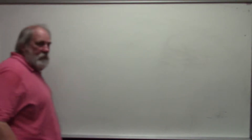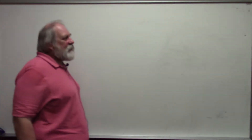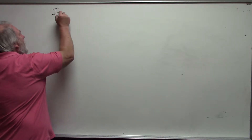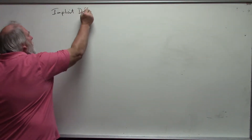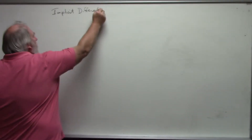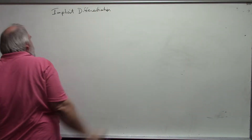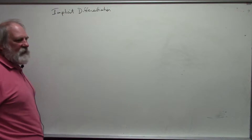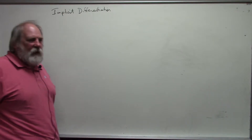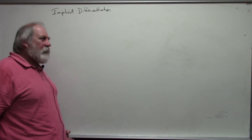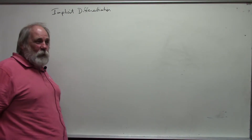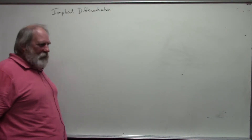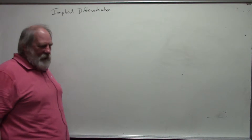Hello. Today's video is going to be about implicit differentiation. Implicit differentiation involves finding the derivative of a variable with respect to another variable, where the equation we have is not written in terms of that variable — we don't have a function of that variable.